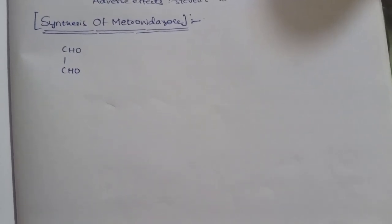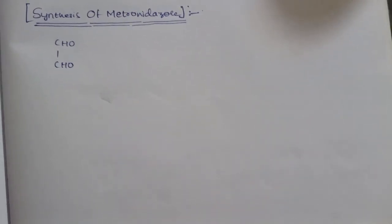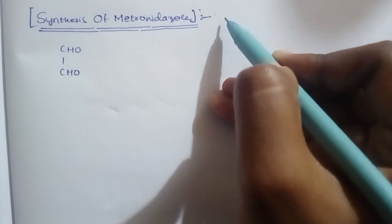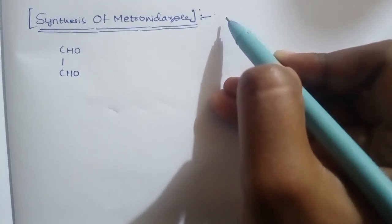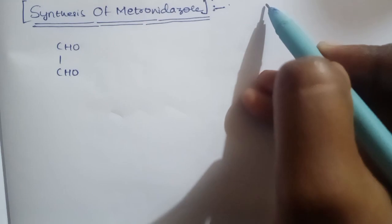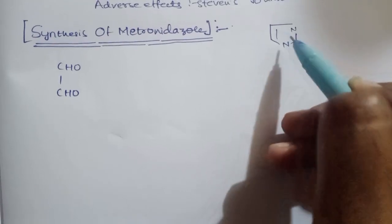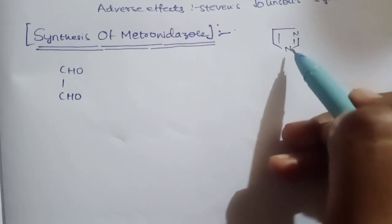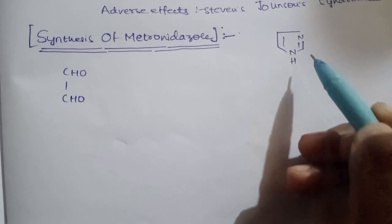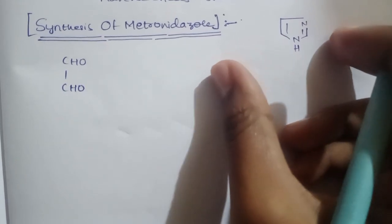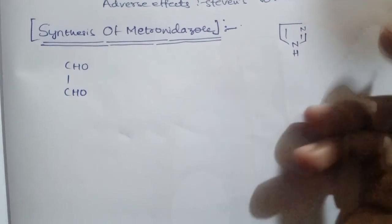In this video we are discussing the synthesis of metronidazole. Remember, metronidazole is an antiprotozoal drug and a drug of choice. The basic structure of metronidazole falls under the classification of imidazole — a 5-membered ring with nitrogens at the 1,3 position. This is the imidazole category, under which we are going to synthesize metronidazole.